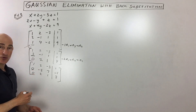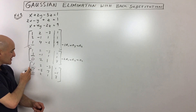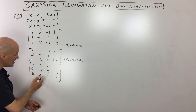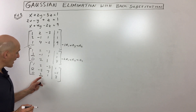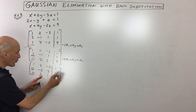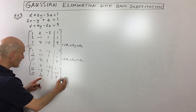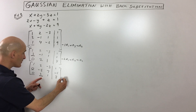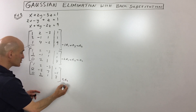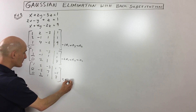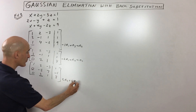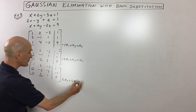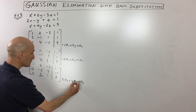Now we've got zero in these two spots. Our next step is to get zero in the remaining position. I'm going to multiply row two by two, add it to five times row three, and put the answer in row three.